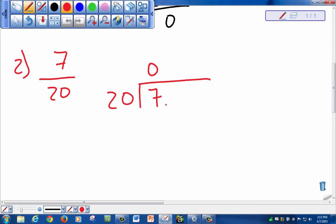So that's when we add a decimal and add a 0. Yes, it's 7.0, but in this case we're going to use it as 70.